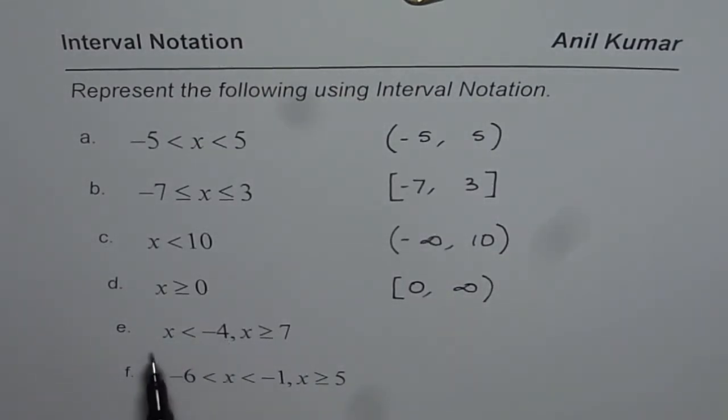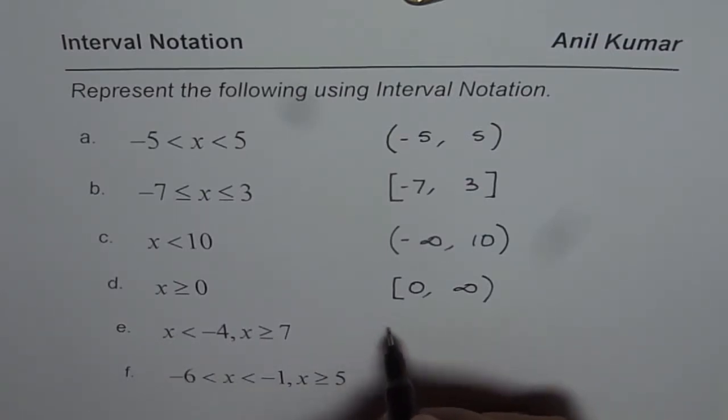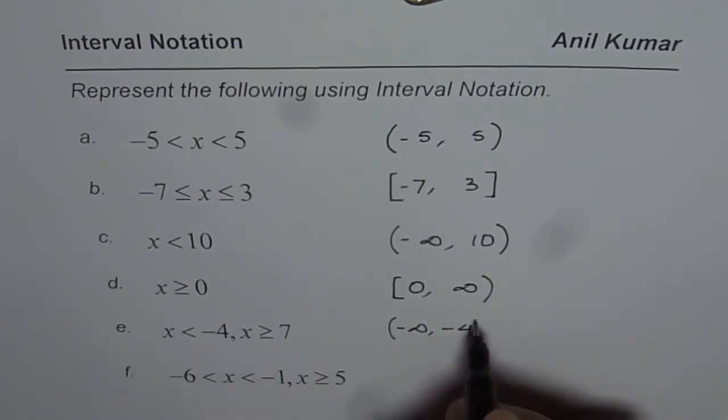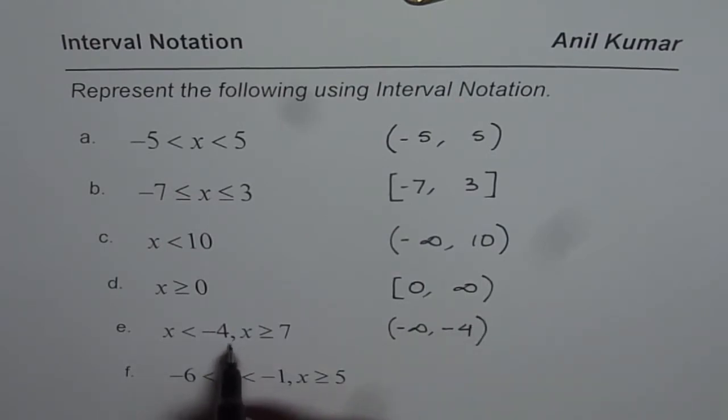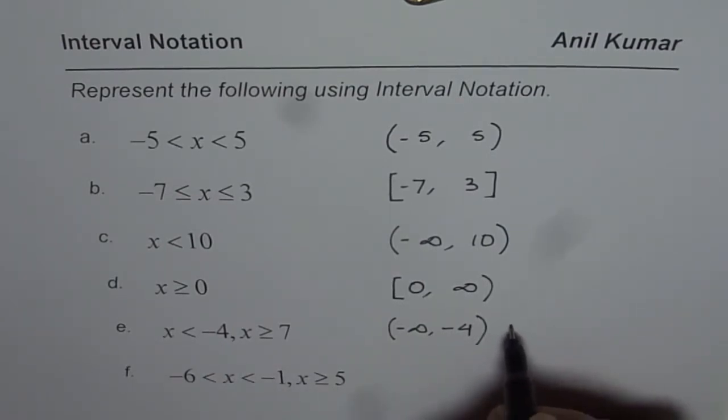Now, we have slightly complicated situation. x is less than minus 4, that means it will go to minus infinity. This is not equal to, and now when we use comma, we could use or. These are two examples of disjunctions, or you could also use union.